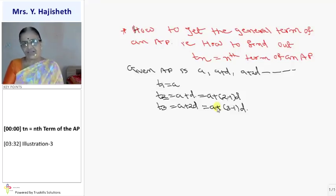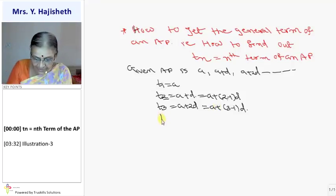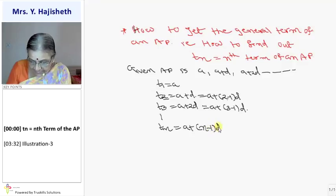T4 lenghe, A plus 3D. So 3 is 1 less than 4. So same way I can continue this up to Tn. Then Tn will be A plus 1 less than N, D.